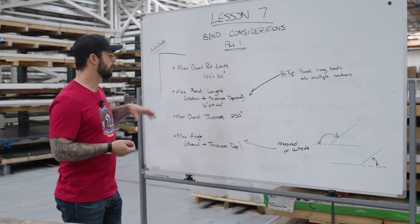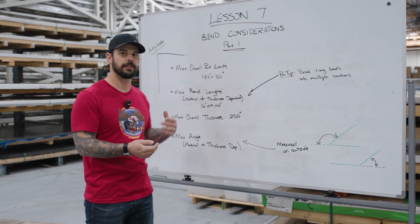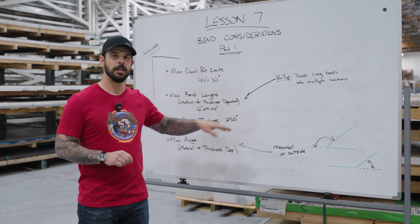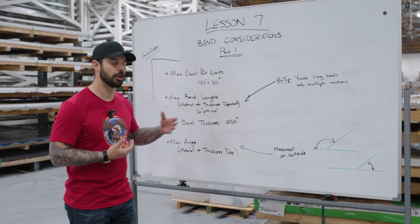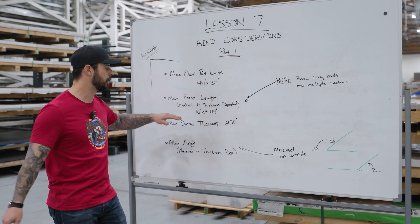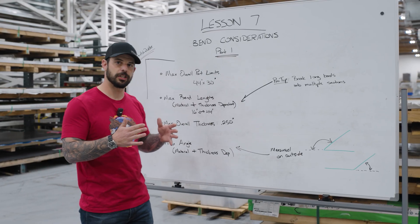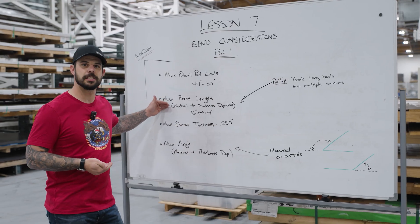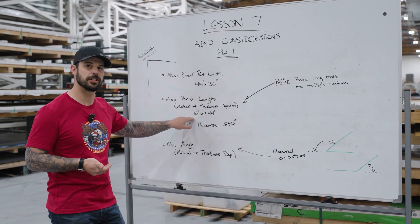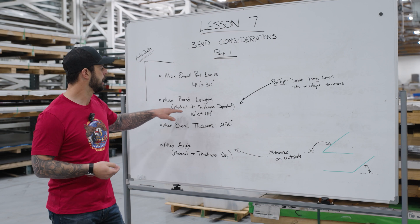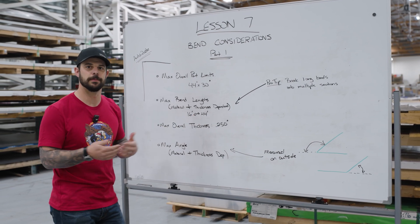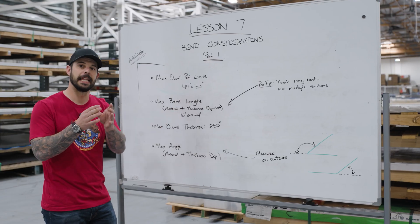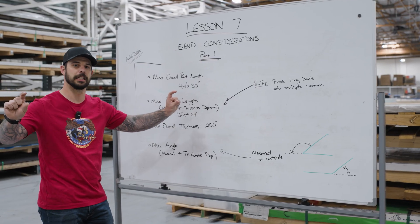The next thing is the max bend length. There are two main factors: material and thickness. Right now we offer anywhere from 16 inches all the way up to 44 inches, and these may change in the future. On a heavier quarter-inch steel, you're going to see 16 inches as the maximum bend length. If you jump up to a thinner aluminum — say 0.100 aluminum — it jumps all the way up to 44 inches of length. That's the length along which we can bend that line.